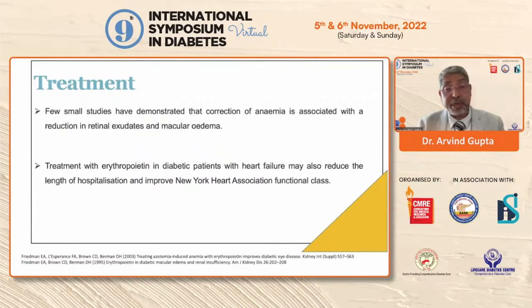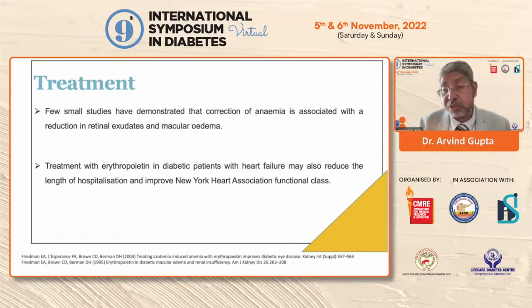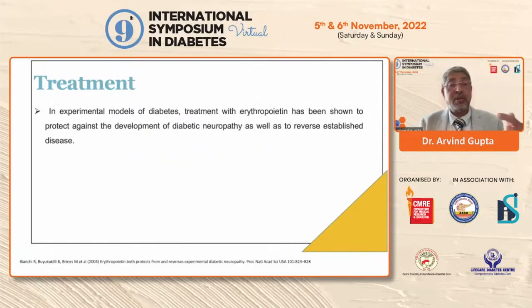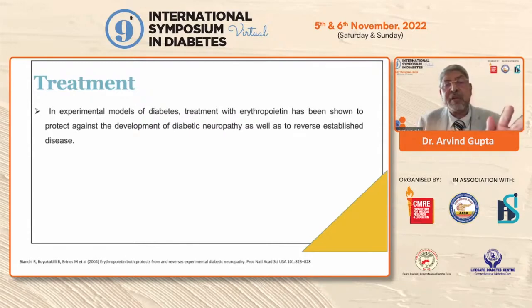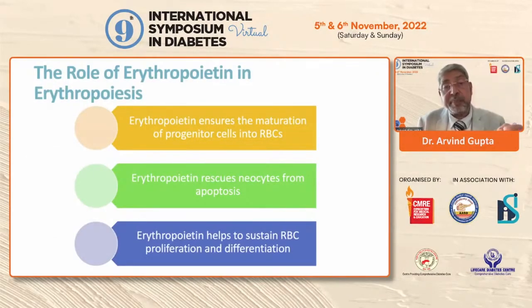Treatment with erythropoietin in diabetic patients with heart failure may also reduce the length of hospitalization and improve the New York Heart Association functional class. In experimental models of diabetes, treatment with erythropoietin has been shown to protect against the development of diabetic neuropathy.